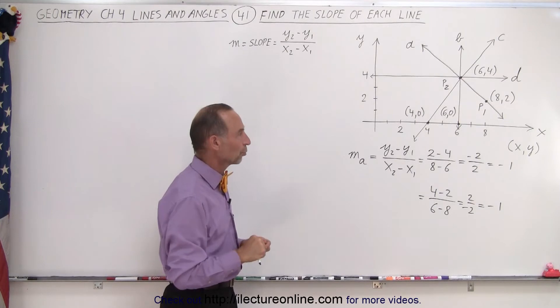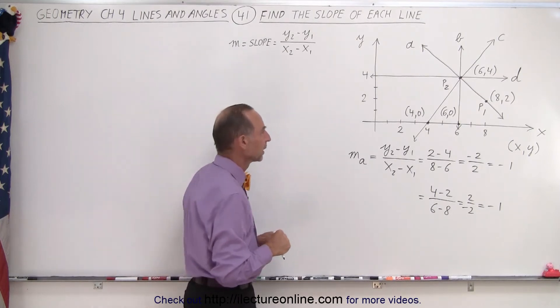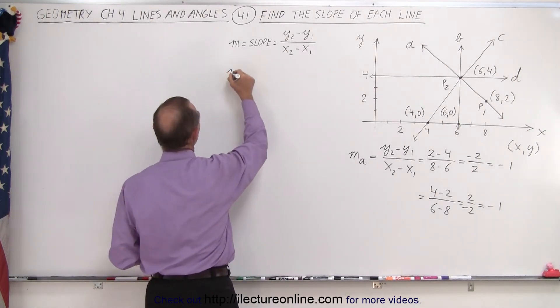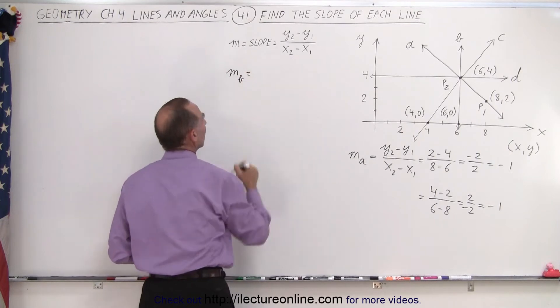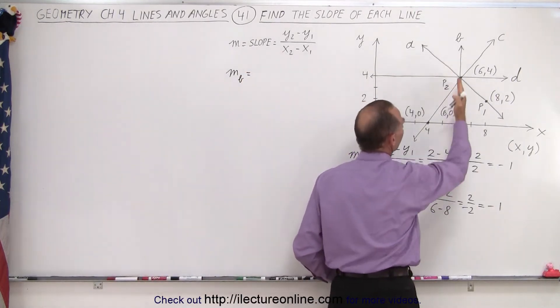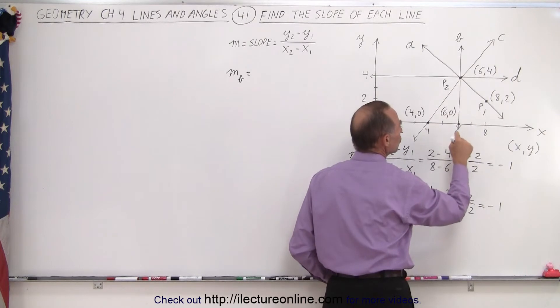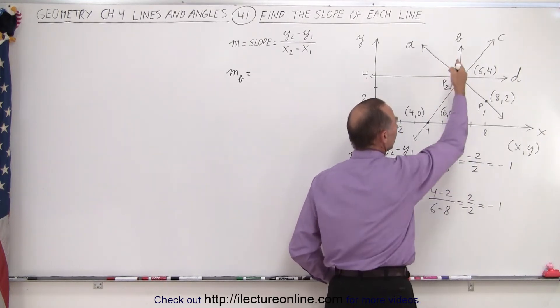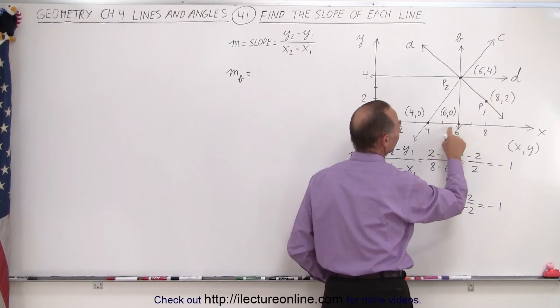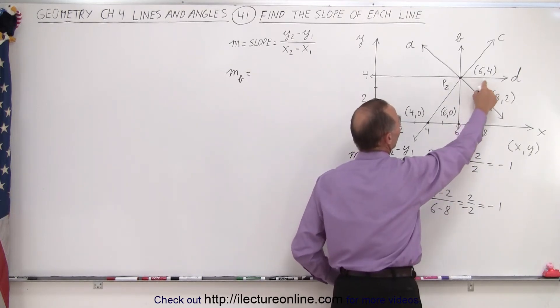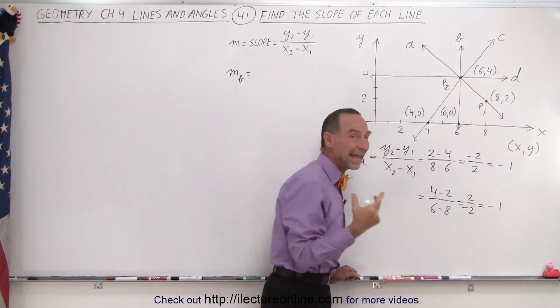Now let's find the slope of b, m sub b. And notice that the line is vertical, which means there are no changes in the x direction. There's only a change in the y direction. Notice that this is point (6,0) and this is point (6,4). Notice that they both have the same x coordinate.